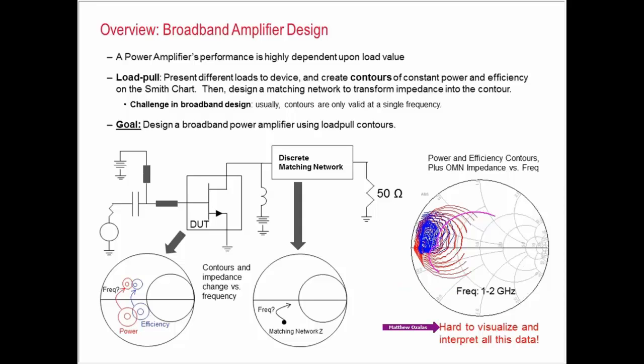There's data everywhere, and it's really hard to tell what's going on. I know at some point the matching network is traversing through some of the contours, but I'm not sure what's going on with the amplifier. So the goal is to design a broadband amplifier using load pool contours somehow, and I'm going to use Python to help me with that process.